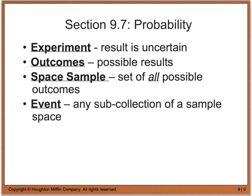The first thing we want to look at is what an experiment is. If you think of any lab or any time that you are doing a quote-unquote experiment, you are usually looking for a result that you do not know, or a result that is uncertain. An outcome would be a possible result, and a sample space would be the set of all possible outcomes — it includes all of your outcomes. And then if we are talking about an event, this is any sub-collection of a sample space.